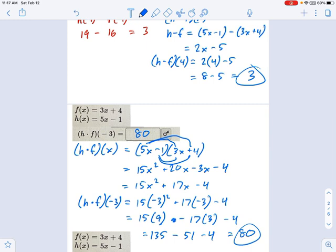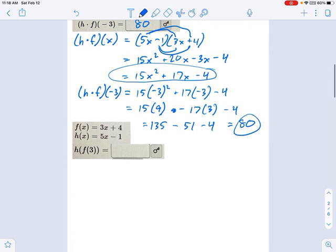Now you could have, as an alternative, done this. You could have done f of negative 3, calculate what that number is, and then multiply it by h of negative 3. That would have worked fine. And maybe that would have been quicker, but you wouldn't know what f times h of x is. So we've got kind of two for one.